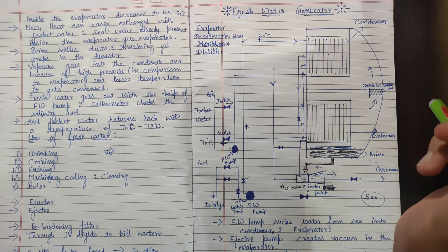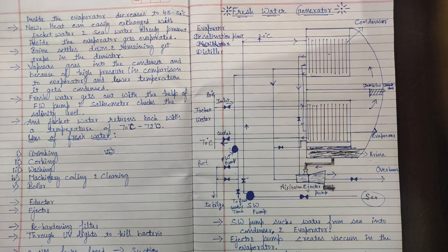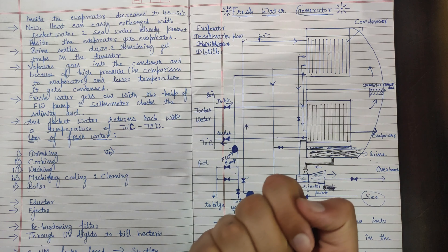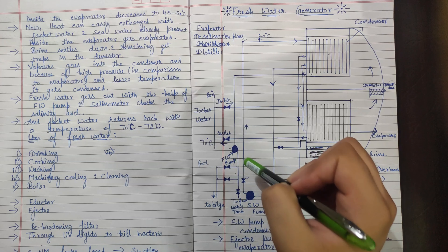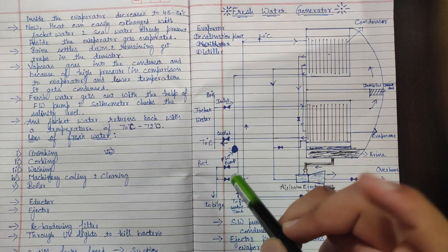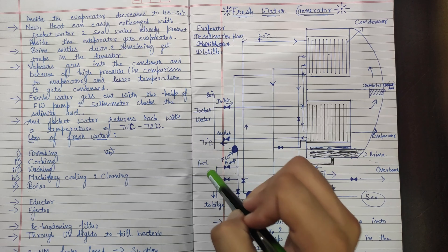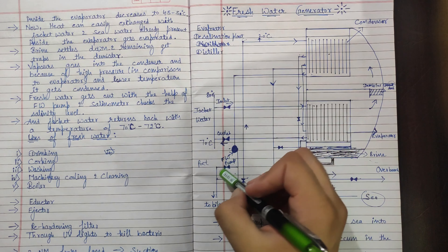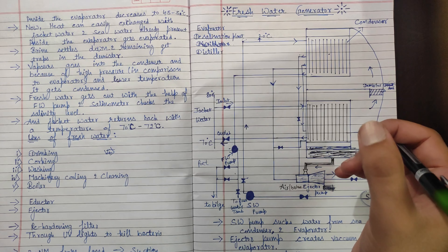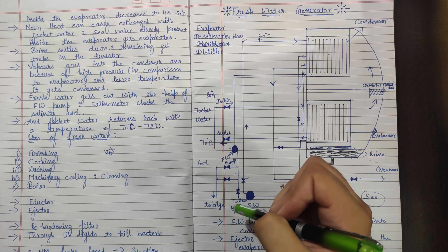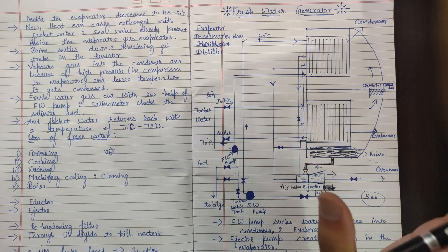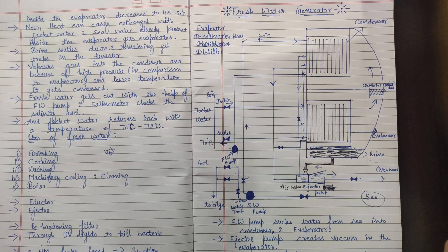When the vapors get condensed, that condensed water is our distillate water — we have reached our end point. We bring out this distillate water through a line using the fresh water pump. There is a meter called the salinometer which checks the salinity level of the water. If the salinity level is not appropriate, it recirculates the water or sends it to the bilges. If the content is acceptable, it sends the water to the fresh water tank.